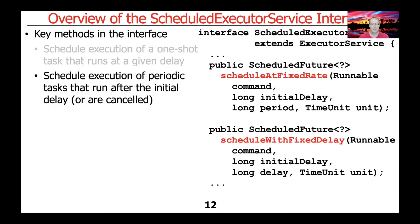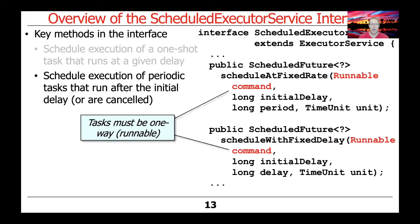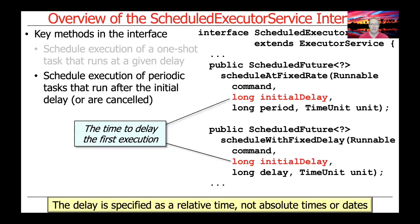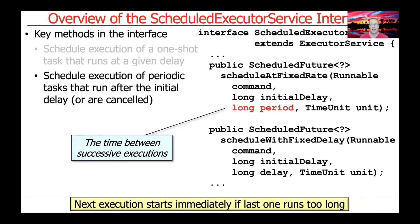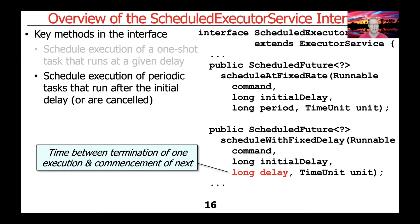There's also another pair of methods used to schedule the execution of periodic tasks that run after an initial delay or can be canceled. Notice that these tasks are both Runnables — they don't return a result directly. The parameter that comes after the Runnable command is the time to delay the first execution, similar to what we saw with schedule, and again these delays are in relative time. For the scheduleAtFixedRate method, there's a parameter specifying how much time to wait between successive executions. Interestingly, if the current execution is taking too long, the next execution will start up, which can sometimes be confusing.